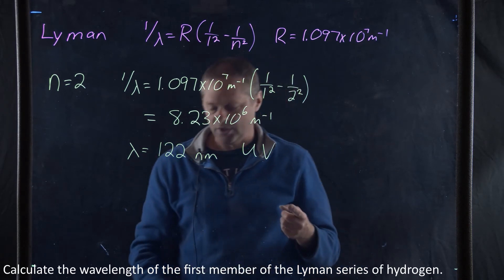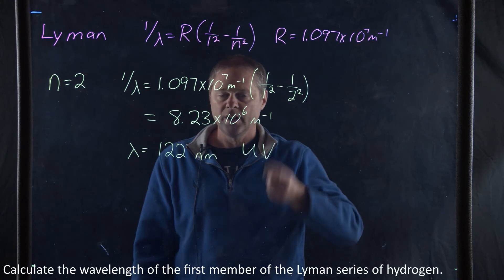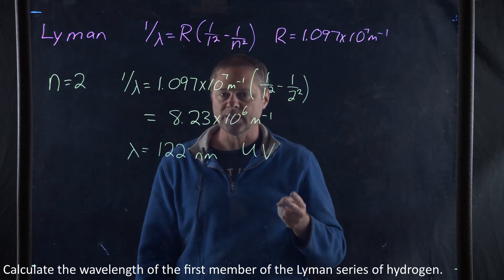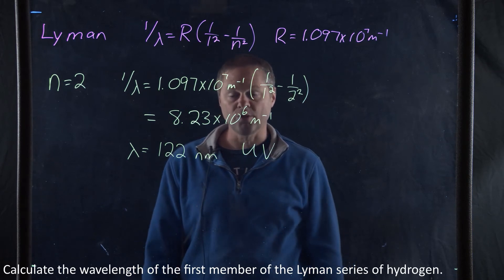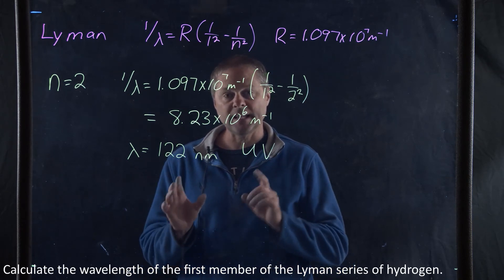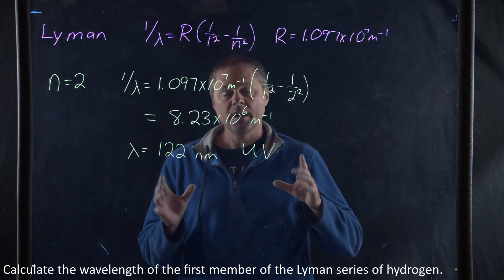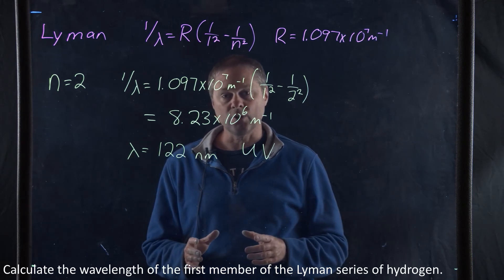So the Balmer series is going to give us visible light, the Paschen series is going to give us infrared light, and lastly, the Lyman series is going to give us ultraviolet light. Remember, that's the light that gets irradiated when the atom relaxes back to the ground state.